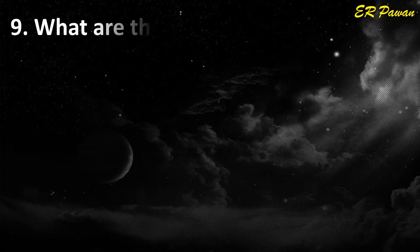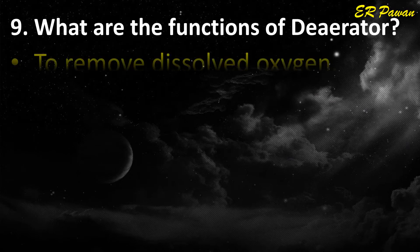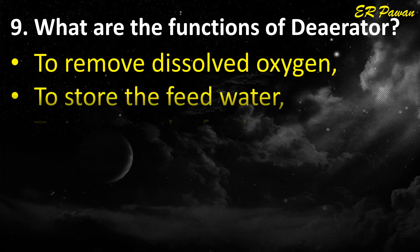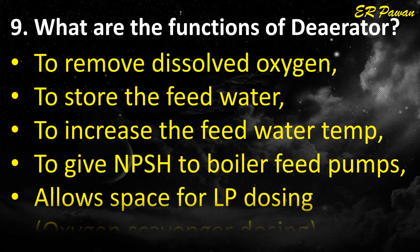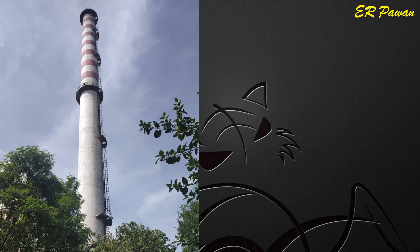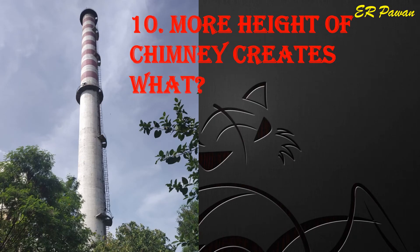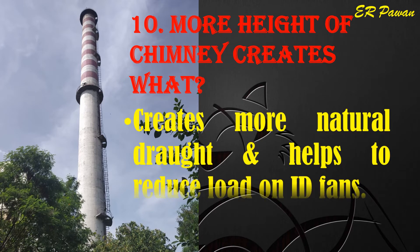Question 9: What are the functions of a deaerator? To remove dissolved oxygen, to store the feed water, to increase the feed water temperature, to give NPSH (net positive suction head) to boiler feed pumps, and to allow space for LP dosing and oxygen scavenger dosing. Question 10: More height of chimney creates what? It creates more natural draft and helps to reduce load on ID fans.